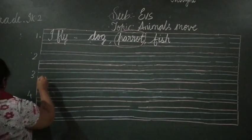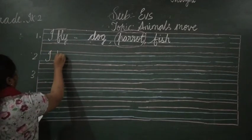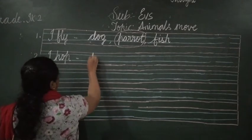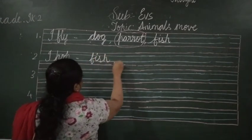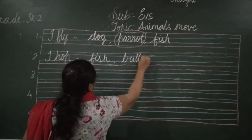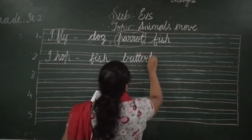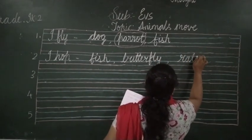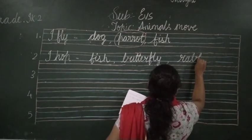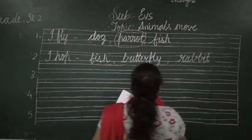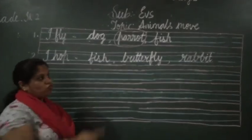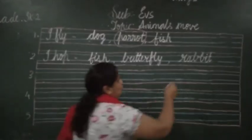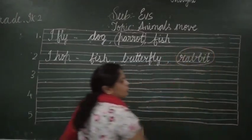Coming to the second one, 'I hop.' The options are fish, butterfly, and rabbit. Which animal hops? Is it a fish? No. Is it a butterfly? No. Rabbit hops. So you have to circle rabbit. Understood?